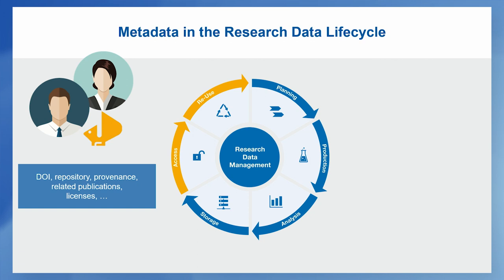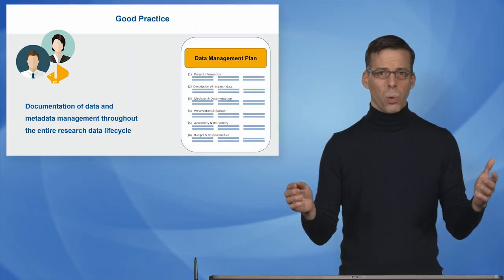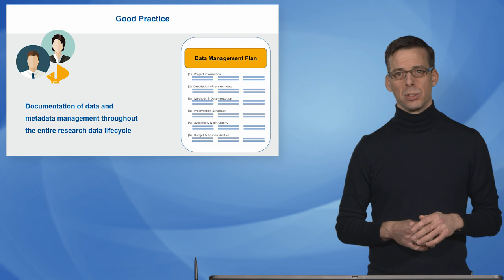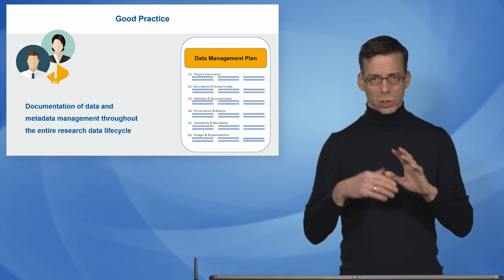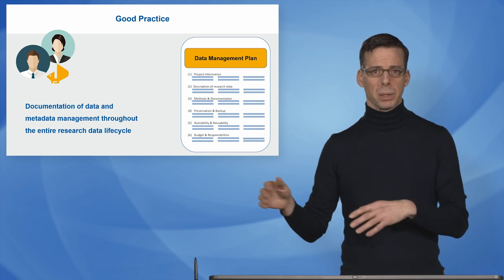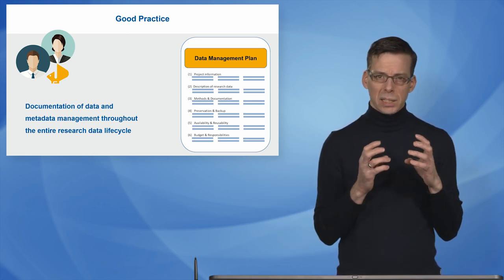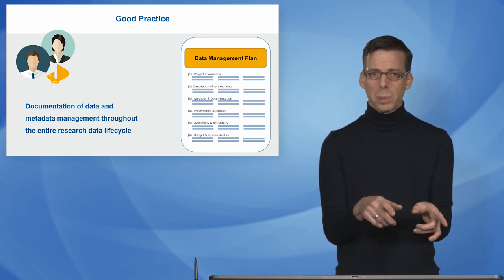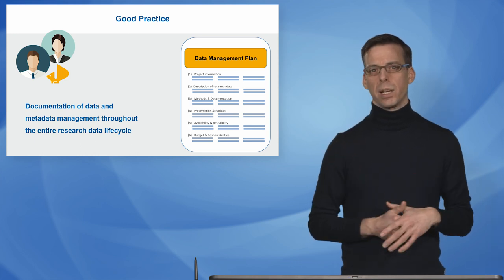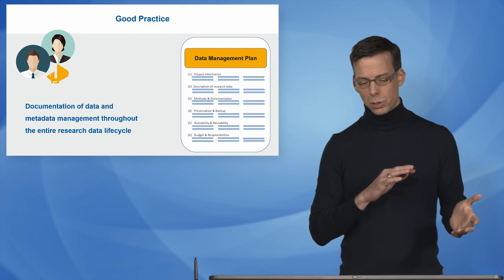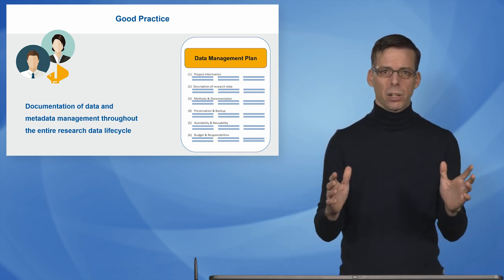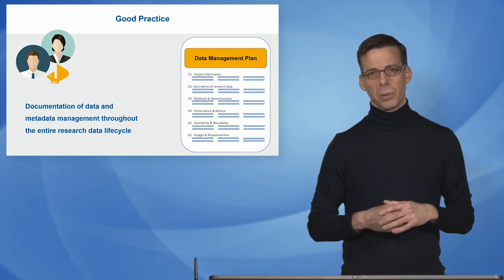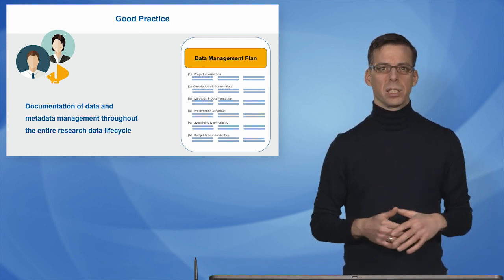As you can see, there is a lot of metadata occurring throughout the research data life cycle. One recommended good practice is to make use of a data management plan. We detail this in other videos covering the generic idea as well as particular contents. The core idea is that it documents not only your data management but also your metadata management, covering every phase of the research data life cycle. A data management plan evolves over time — start simple, and in the best case, end up with a complete documentation of all data and metadata management in your project.